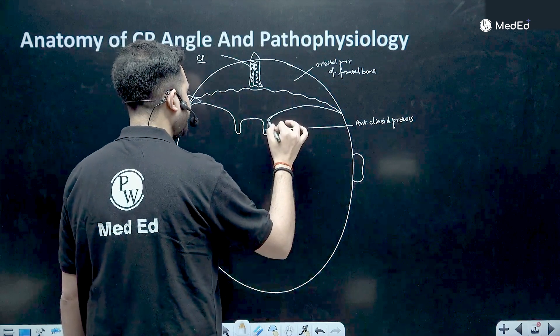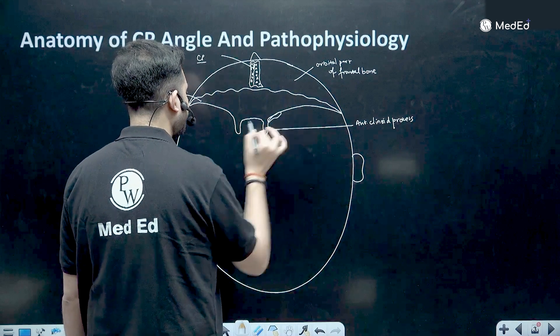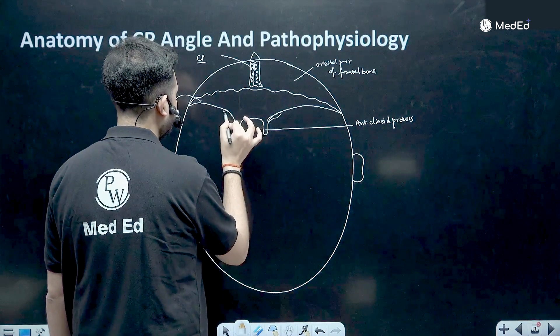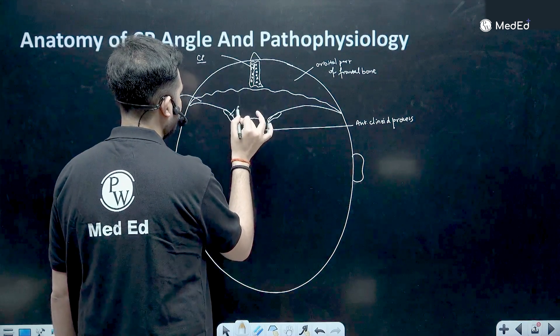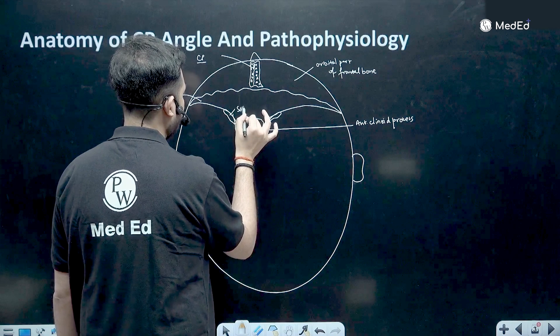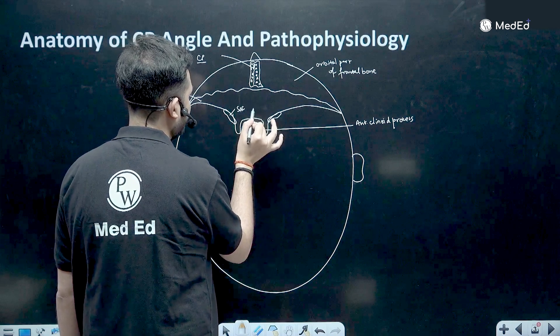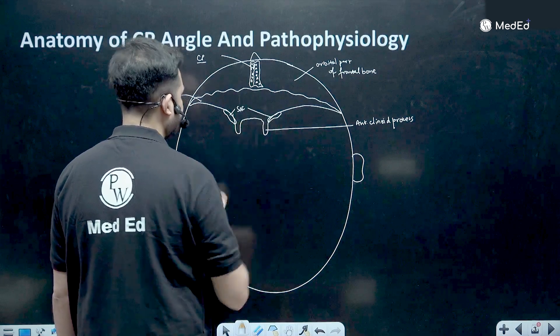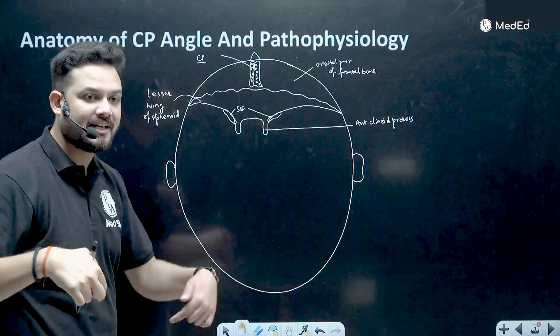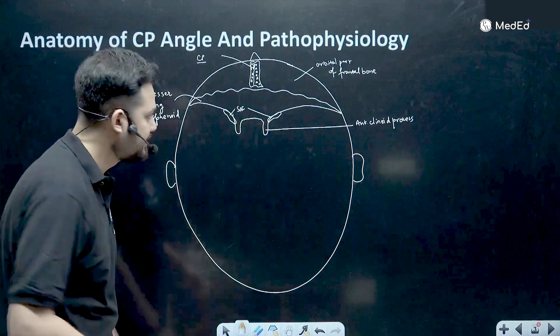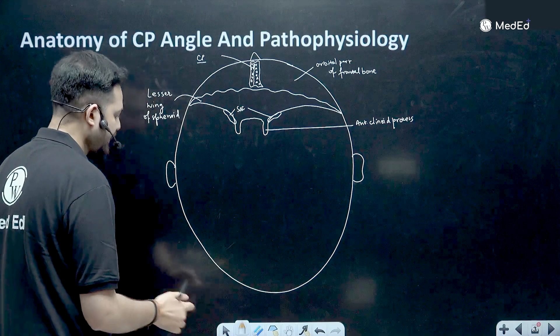Here there is a fissure called the superior orbital fissure — you have one on each side. These are called superior orbital fissures, which are actually hidden within the lesser wing of sphenoid.